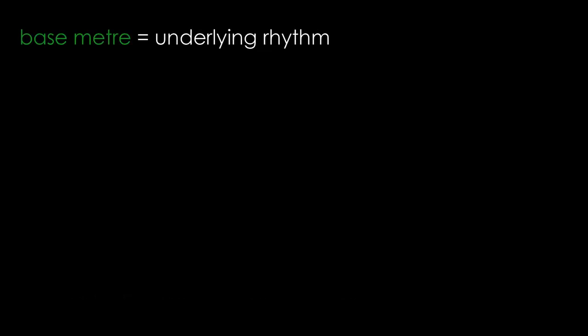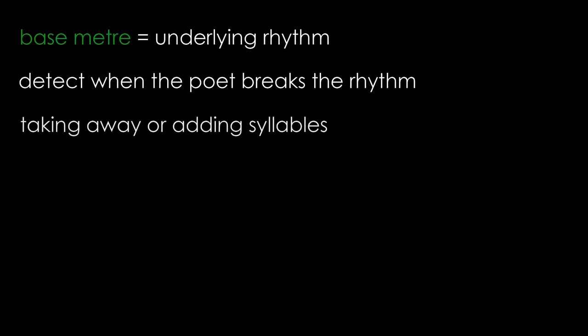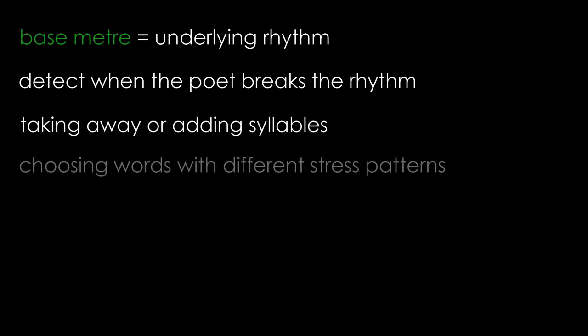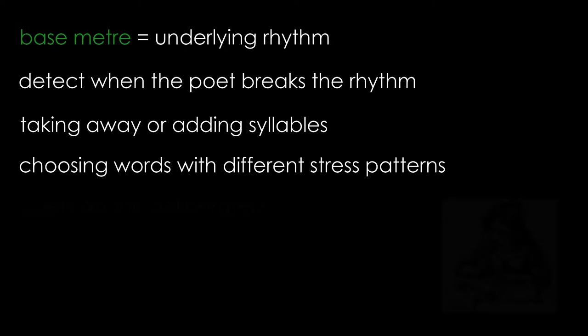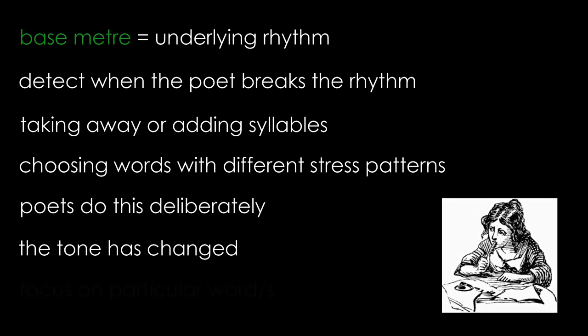What is even more important than being able to identify the underlying rhythm or base metre is to detect when poets choose to break it — sometimes by adding or taking away syllables, sometimes by choosing words with a different stress pattern. Why have they done this? It's not by accident and it's not because they can't count syllables. It's often a way of signalling to the reader that the tone has changed, or that they want the reader to focus on a particular word or group of words.